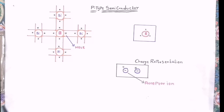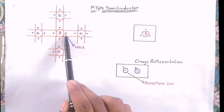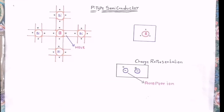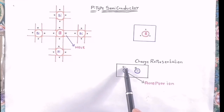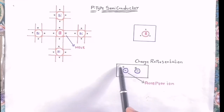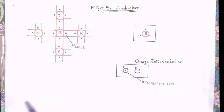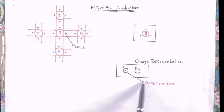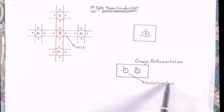The boron atom needs to gain one electron, so it is represented as a negative ion with a vacancy of electron — also called a hole — above it. This negative ion is also called an acceptor ion because it needs to accept one electron.